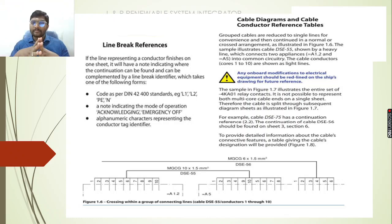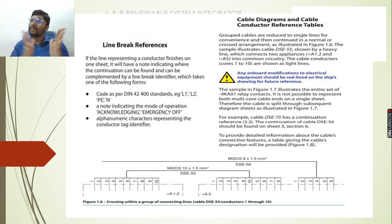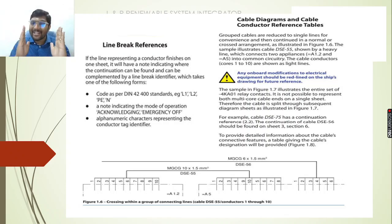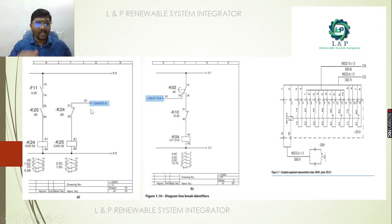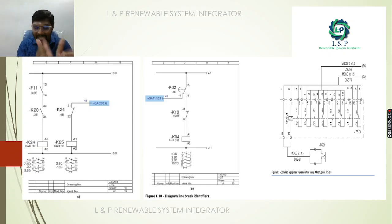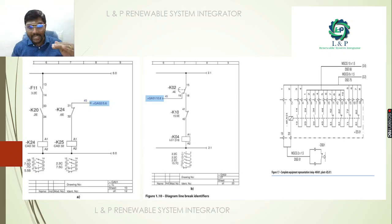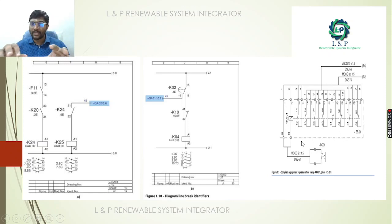Next are the line break references. We may not always be able to complete an entire circuit or diagram continuation on a single page — we may need to continue on the next drawing. In such cases, we use line break references. Here is an example: we have a terminal with a circuit continuation, but no space to draw it in that location. So we shift it to another drawing and represent where we broke it and what the continuation is — both things need to be mentioned.